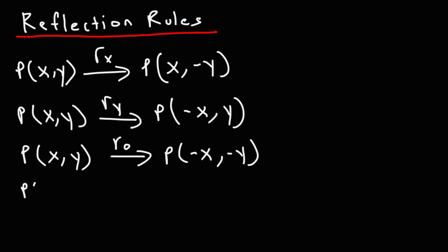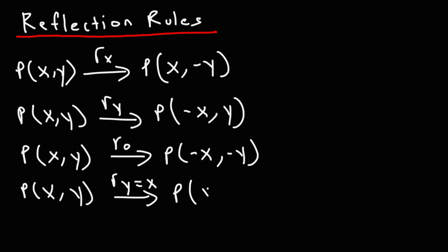Now what about reflecting the point across the line y equals x? In order to reflect it about that line you're basically finding the inverse of the point — all you have to do is switch x and y, so (x, y) becomes (y, x).